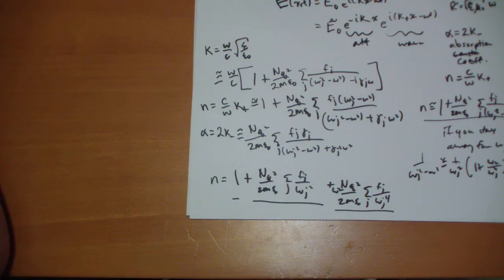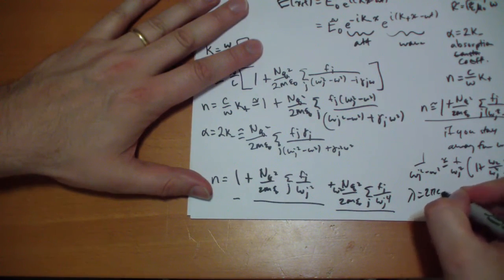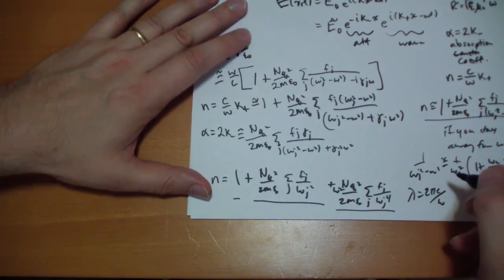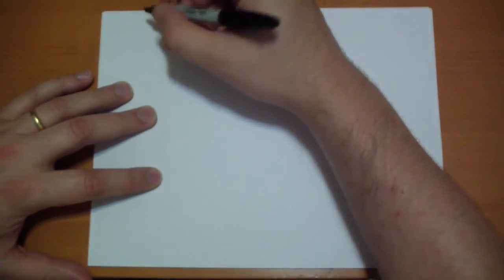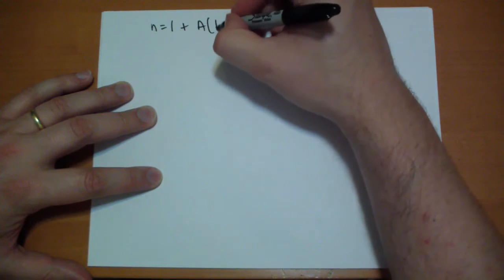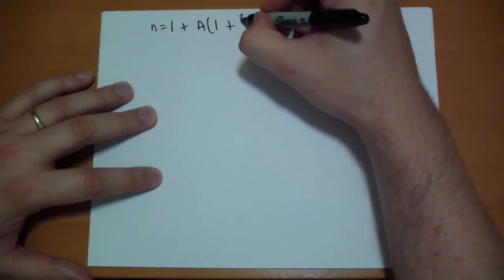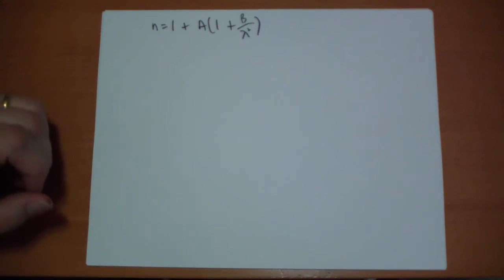When your lambda, if you want to rewrite this in terms of the wavelength lambda, lambda being of course 2 pi c over omega, then you get this nice little formula. Let me write it on a new page, I should have done this on a new page. N is 1 plus a times 1 plus b over lambda squared. And this is called Cauchy's equation.